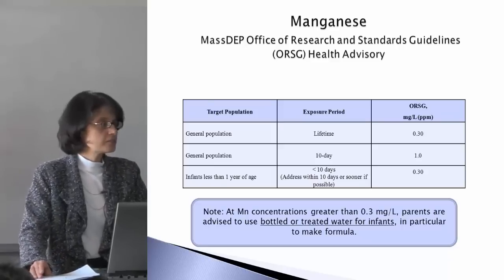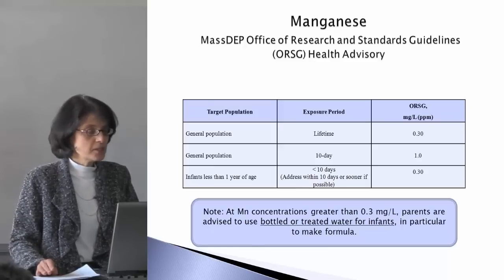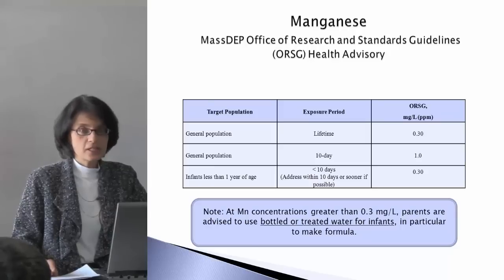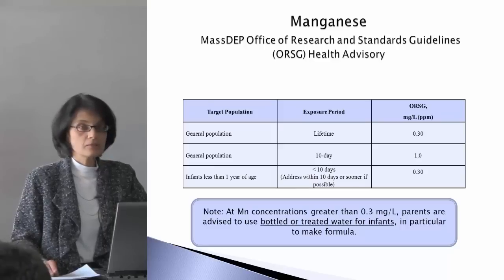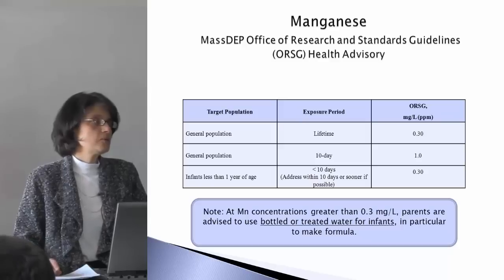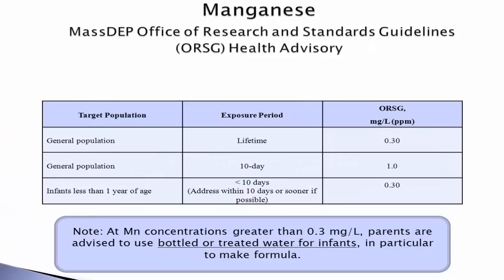For the general population, for lifetime exposure, it's recommended that the level in the drinking water not exceed 0.3 milligrams per liter. For the general population, if your sample results show manganese greater than 1.0, it's recommended that the general population not drink the water more than a 10-day exposure. For infants less than one year of age, it's recommended they are not exposed to drinking water with greater than 0.3 milligrams per liter for more than 10 days. Language in the public notice references infants ingesting this water and suggests that alternative water such as bottled or treated water be used for infants.